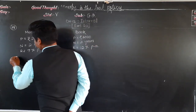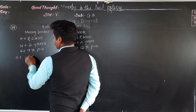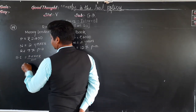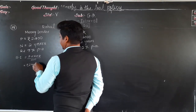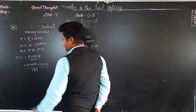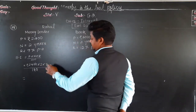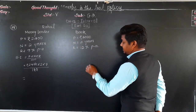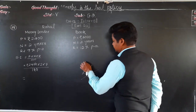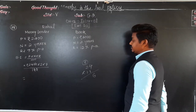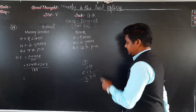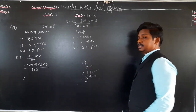For the money lender loan: simple interest equals P into N into R upon 100 = 2400 into 2 into 7 upon 100. Cancelling two zeros, we get 24 into 2 into 7. That is 24 into 14. Calculating: 14 fours are 56, 14 twos are 28 plus 5 carried gives 33 — so the interest is rupees 336.